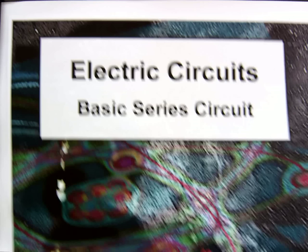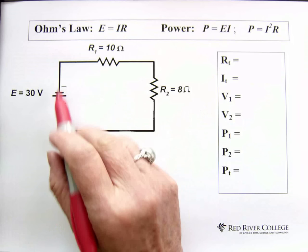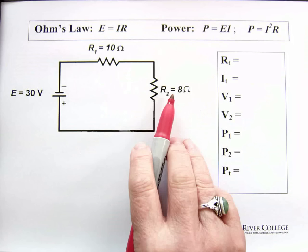So here we have a simple series circuit. It has a battery with 30 volts, one resistor that's 10 ohms, and a second resistor that is 8 ohms.